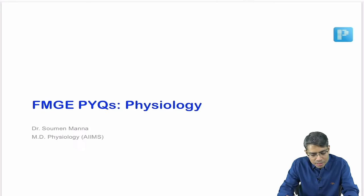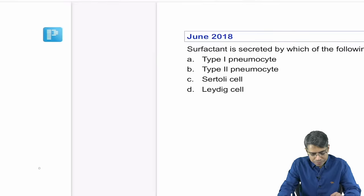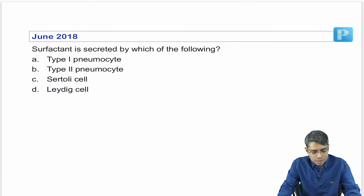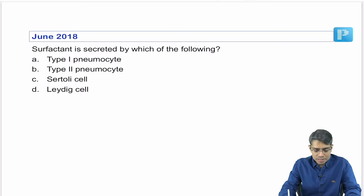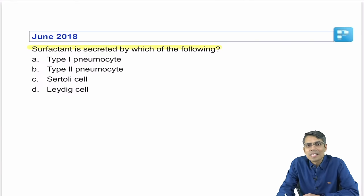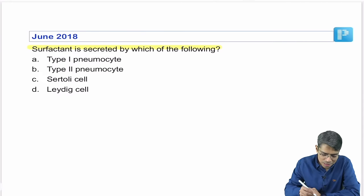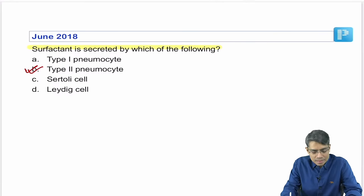Let's start. First question is from June 2018. This is a simple question: surfactant is secreted by which of the following? All of you should be able to answer this. It is directly secreted by Type 2 pneumocytes.